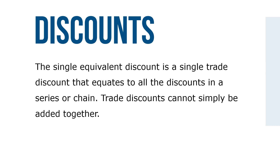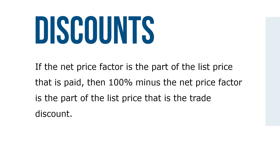Trade discounts cannot simply be added together. Here's the logic: the list price of merchandise is 100%. If the net price factor is the part of the list price that is paid, then 100% minus the net price factor is the part of the list price that is the trade discount. The single equivalent discount, therefore, is the complement of the net price factor: 100% minus the net price factor.